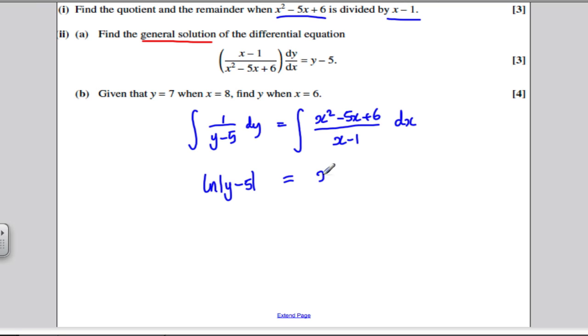You get x minus 4 and you get the remainder of 2 over x minus 1. And all of that is integrated with respect to x.